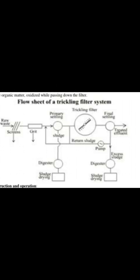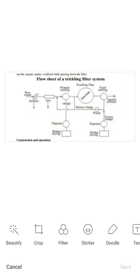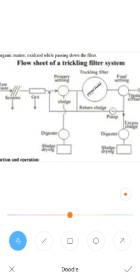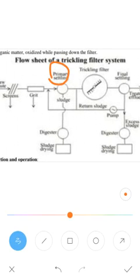The main function of trickling filters is as follows. Trickling filters consist of a tank containing a coarser filter medium. There are two types of filter media: finer filters and coarser filters. In trickling filters, a coarser filter medium is used.